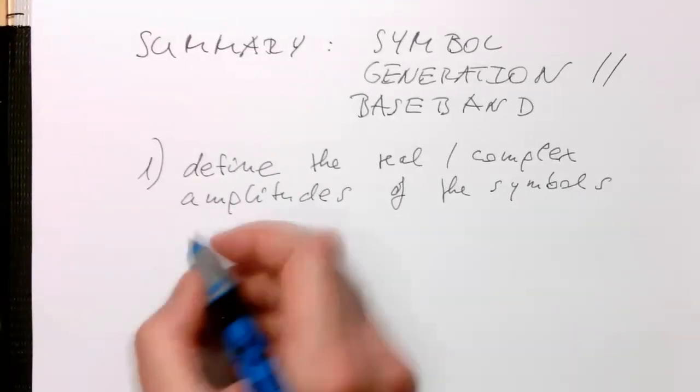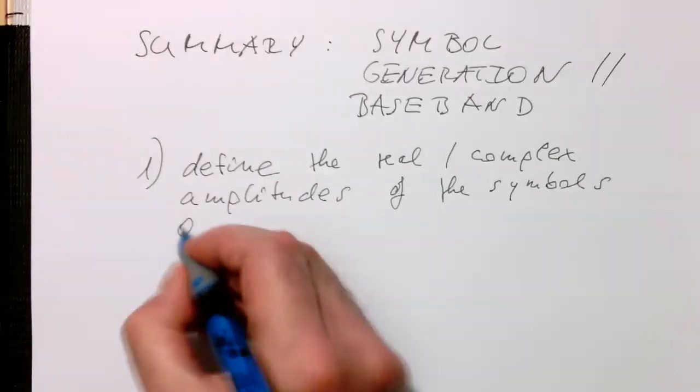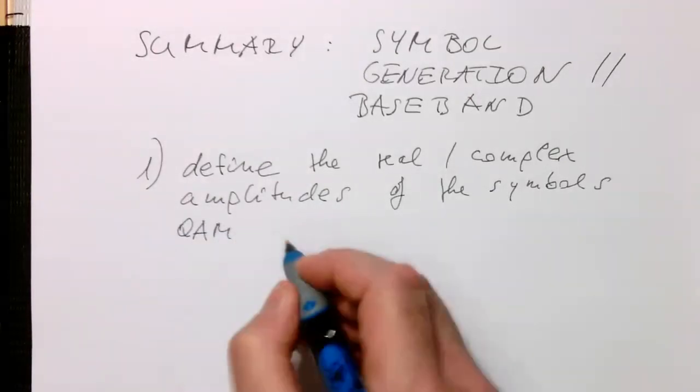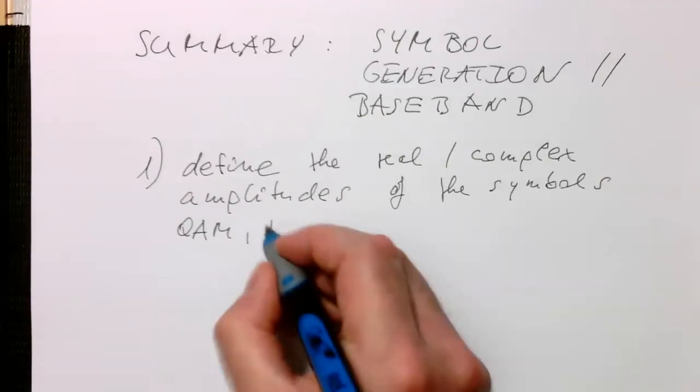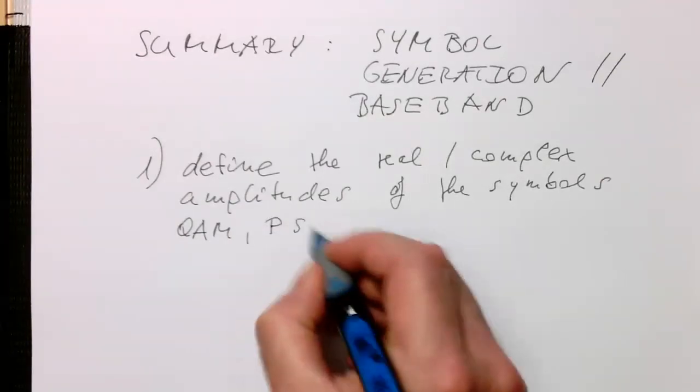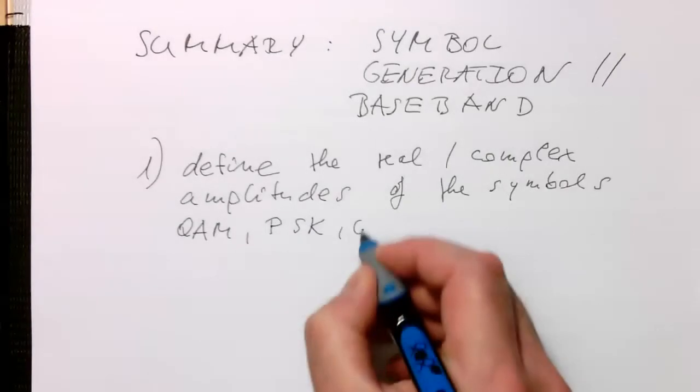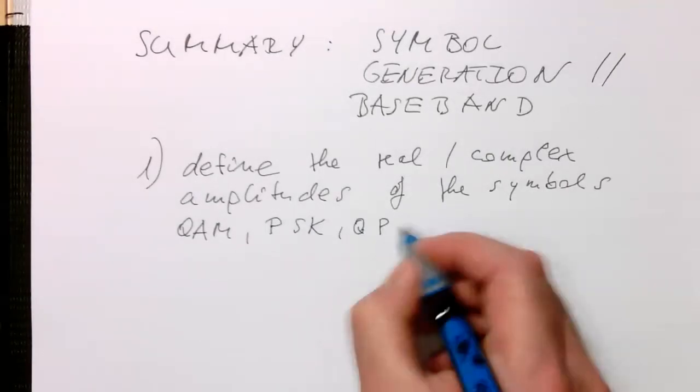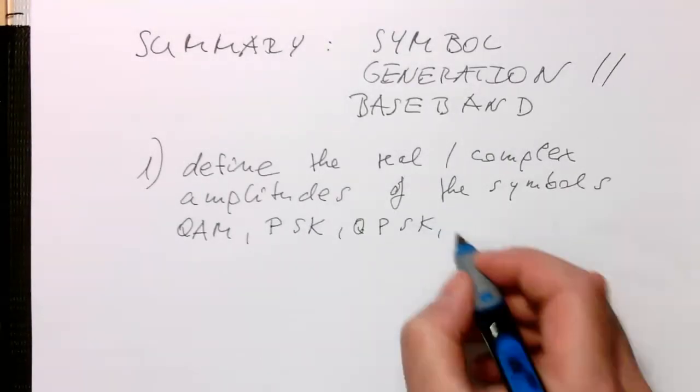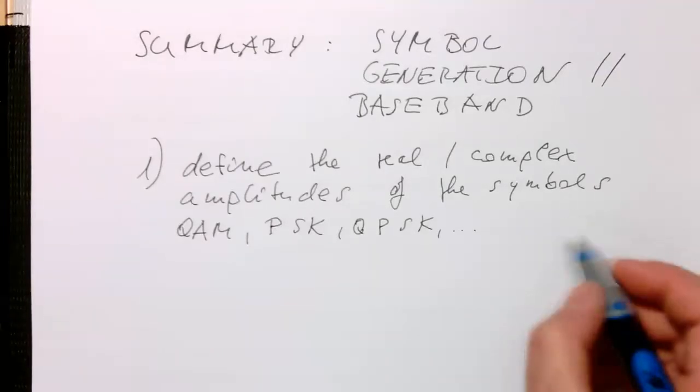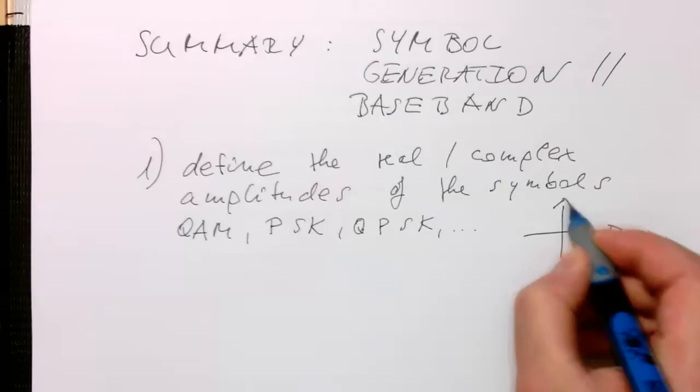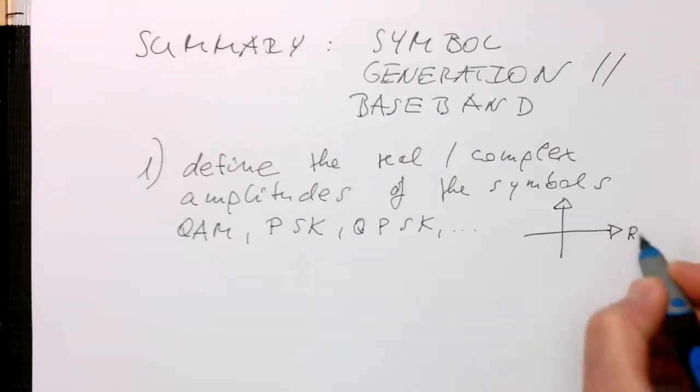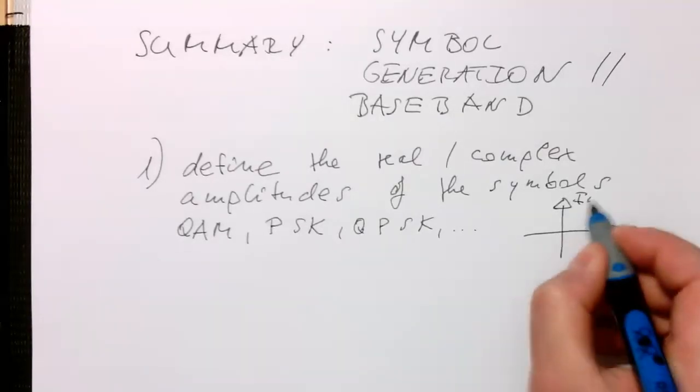For example, QAM, or we had phase shift keying PSK, QPSK, and so on. But in general, our symbols are complex valued. They have a real and an imaginary part.